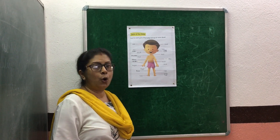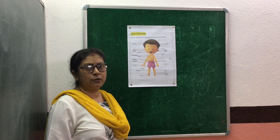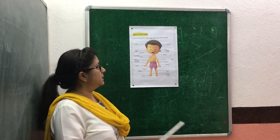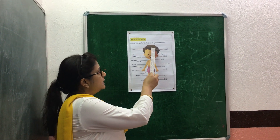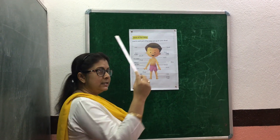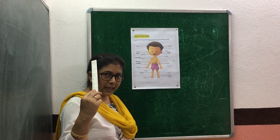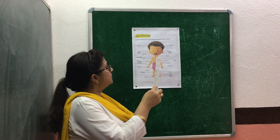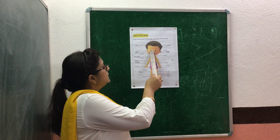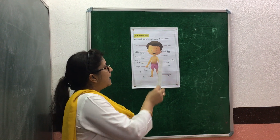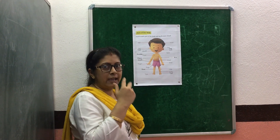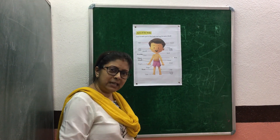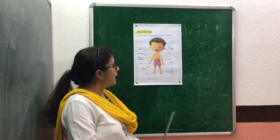Let's learn all the names of our body parts. This is head. These are eyes. We have two eyes. We see with our eyes.